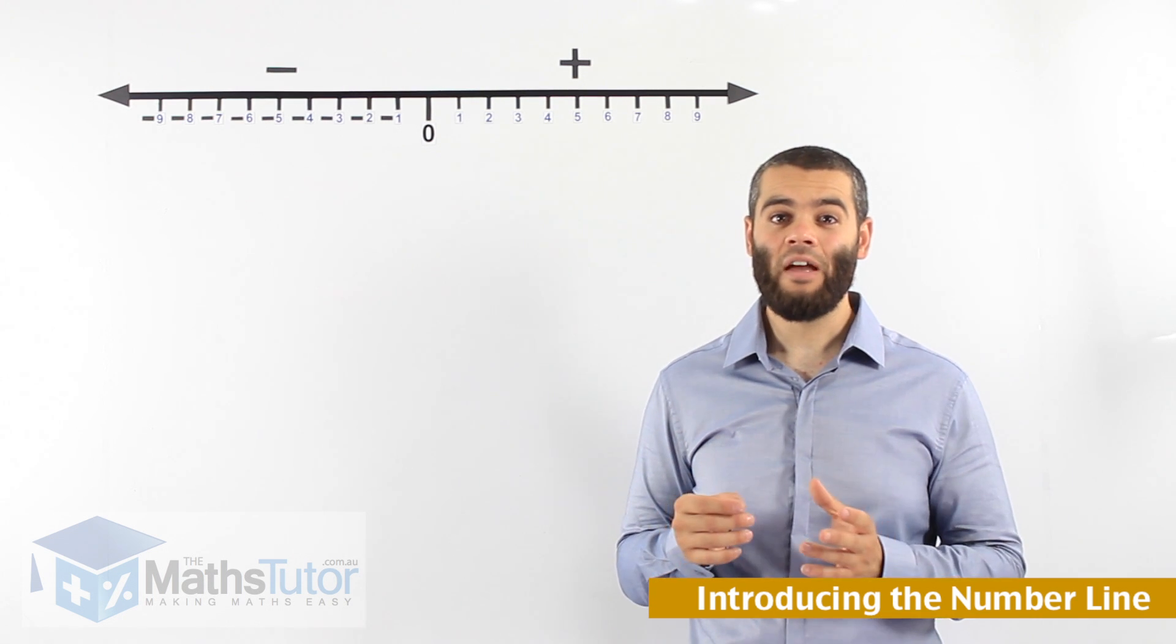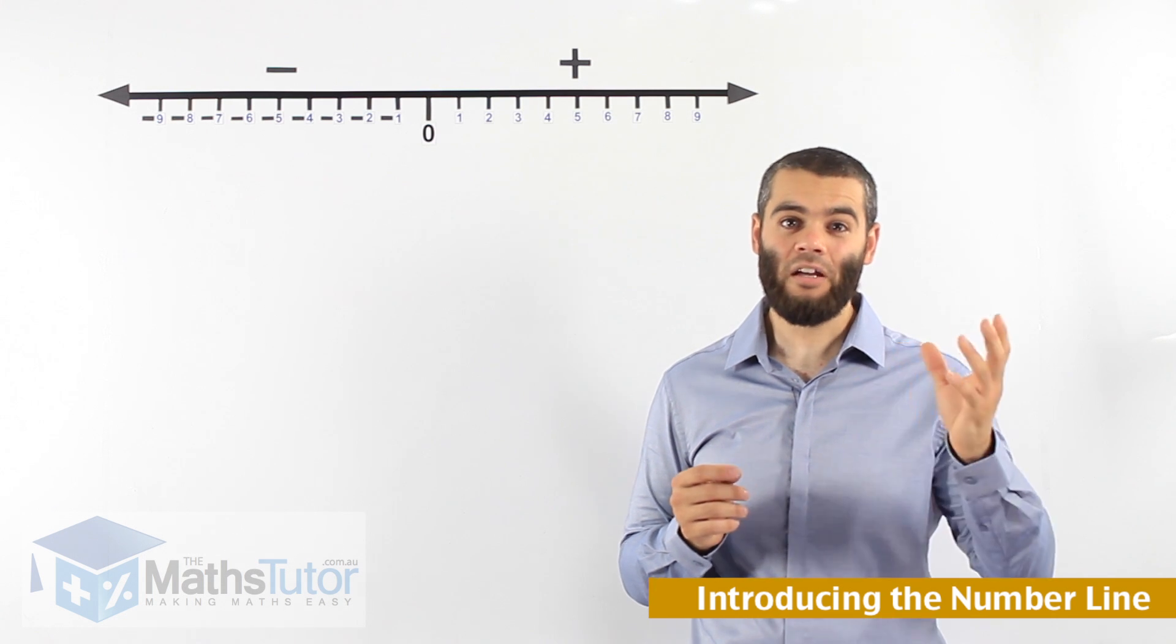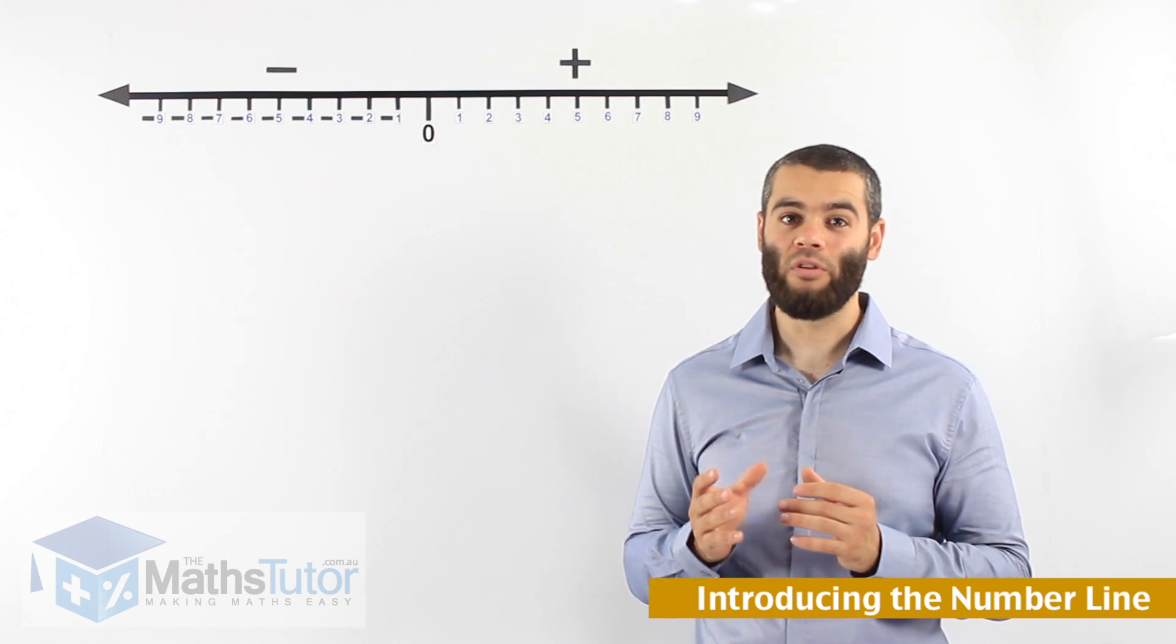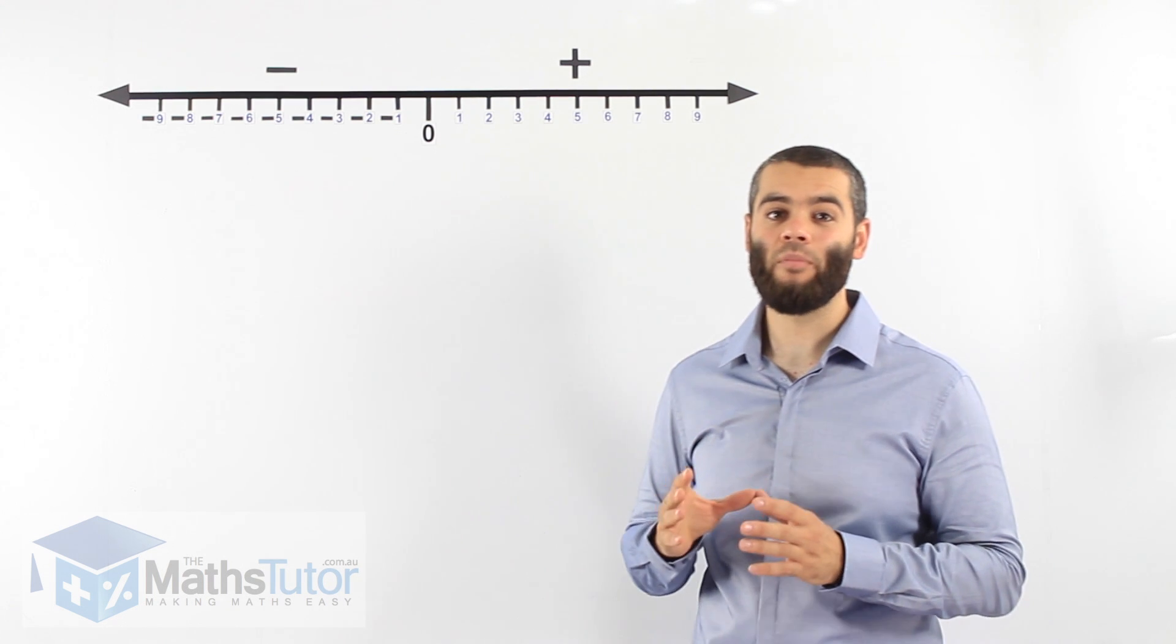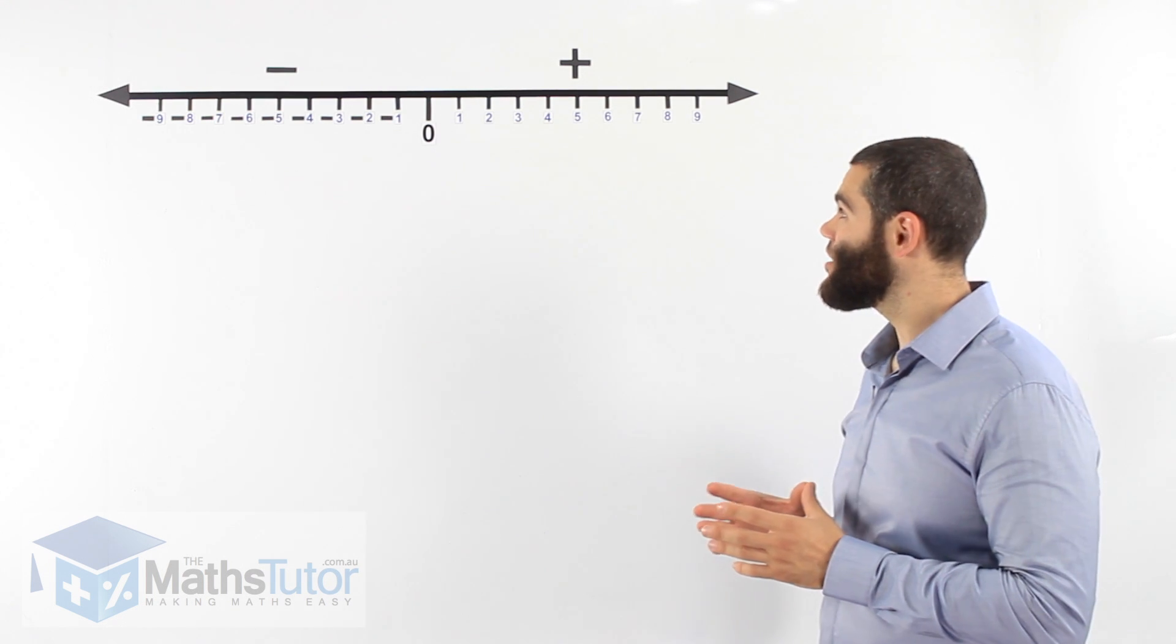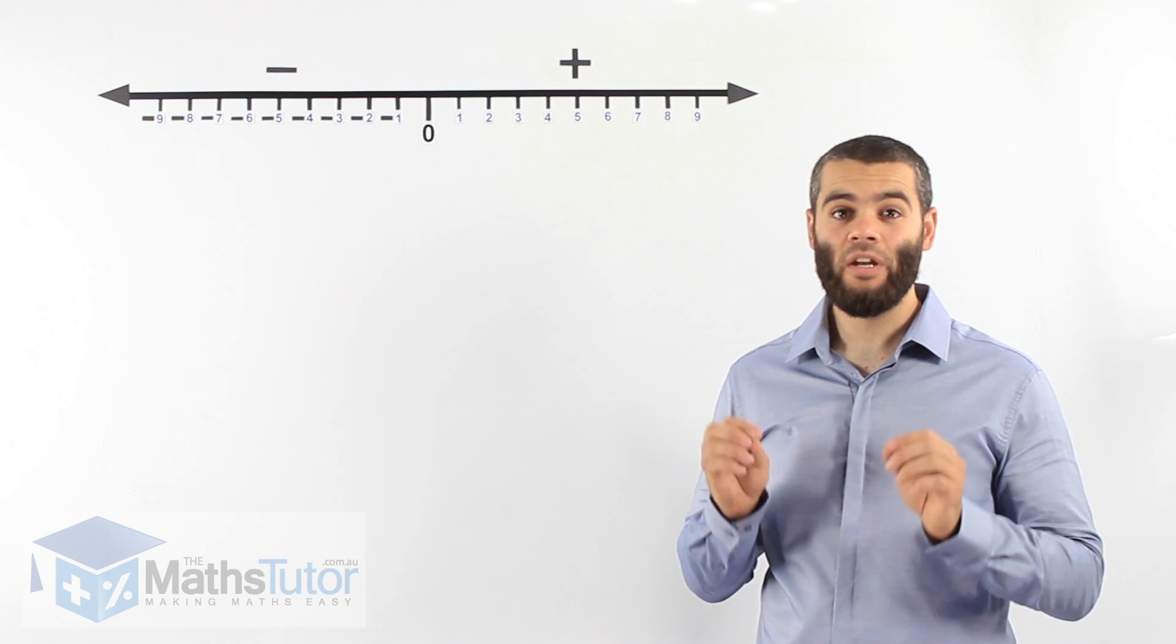Now these numbers actually have a value smaller than zero, so they are pretty small in value. Now let's look at the number line here. It's an example of how the number line is, and as you can see we have straight in the middle the number zero.